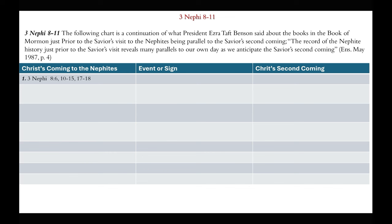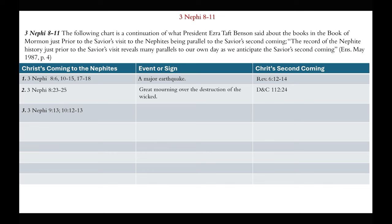In 3rd Nephi 3:8, the sign was a major earthquake — that did happen and will happen again in Revelation 6. In 3rd Nephi 8:23-25, there was great mourning over the destruction of the wicked, which will again happen per D&C 112:24. In 3rd Nephi 9:13 and 10, the righteous survived the destruction, which will happen again according to 1st Nephi 22 and D&C 97. In 3rd Nephi 9 and 11, the voice of the Lord was heard by the righteous, which will happen again per D&C 43 and 45.